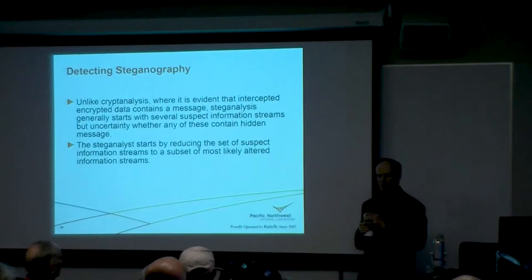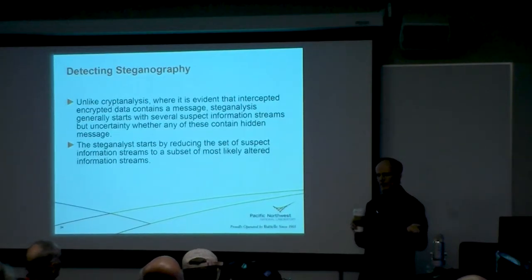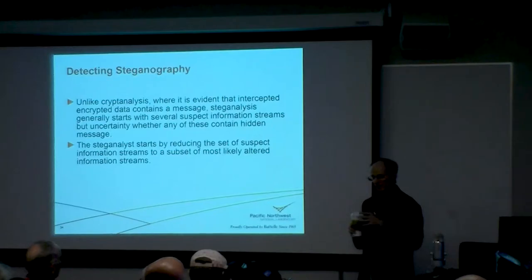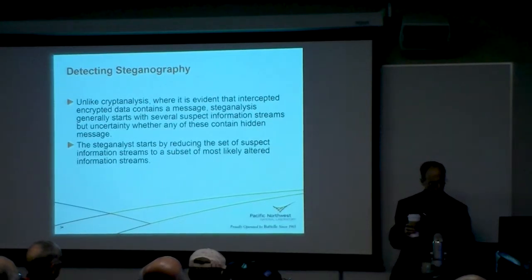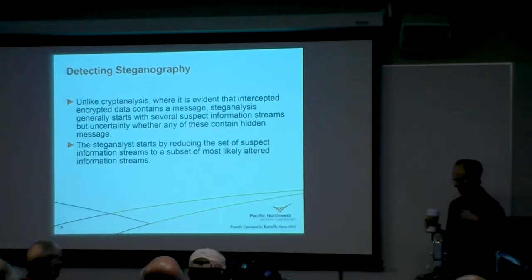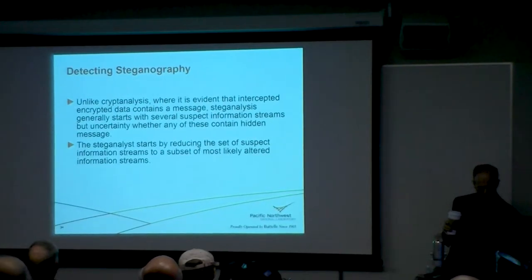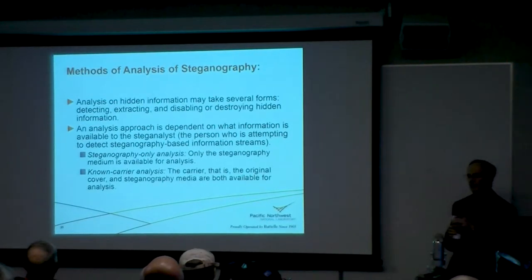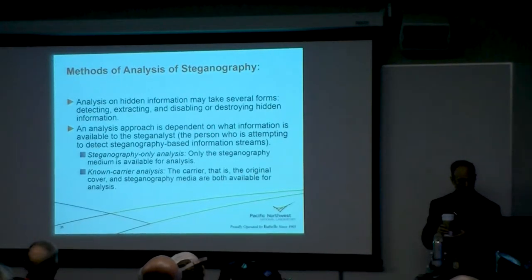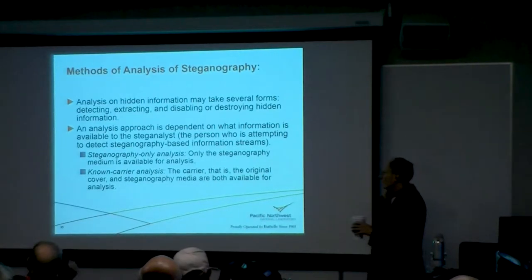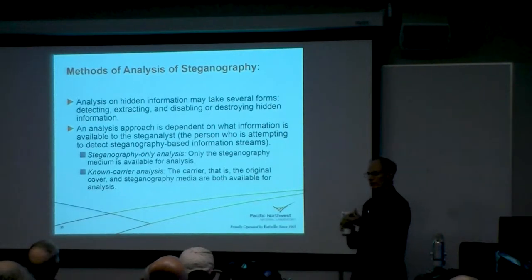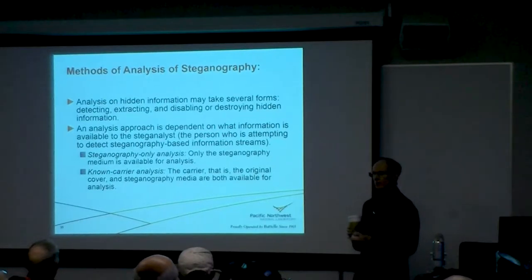Cryptanalysis is pretty obvious when you've got something encrypted — you know when something is probably being encrypted. We knew the German high command was sending stuff to submarine commanders and vice versa. But knowing that German spies in the U.S. during World War II were getting secret messages was much harder to detect. Steganography is the process of putting a secret message in. Steganalysis is the process of determining that there is a secret message, and there are a couple of different ways you can do it.